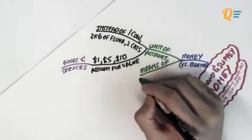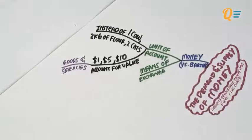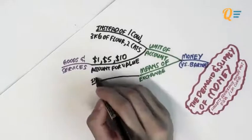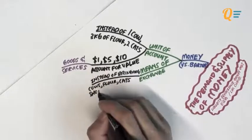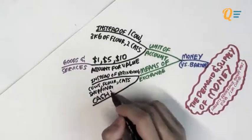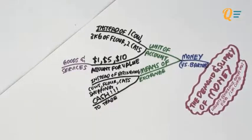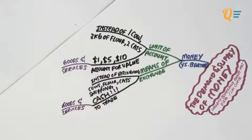The next function of money is that it acts as a means of exchange. I think this one is pretty obvious. So instead of bringing cows, bags of flour, and cats to go shopping, we can use cash to trade for certain goods and services. Money is more for convenience.